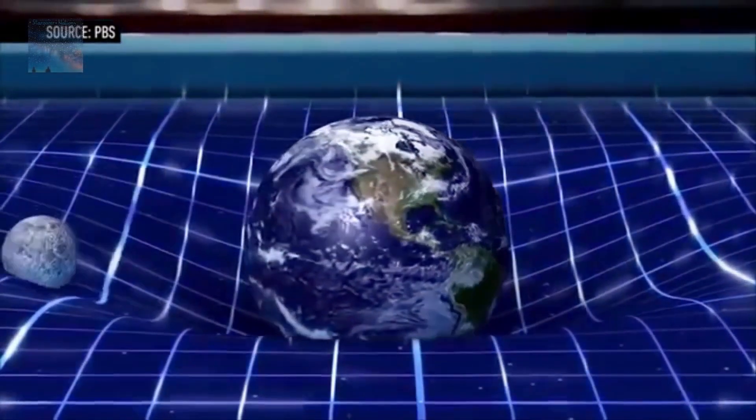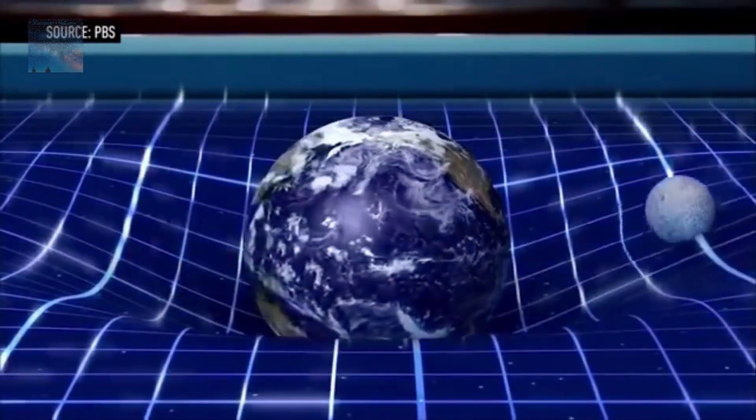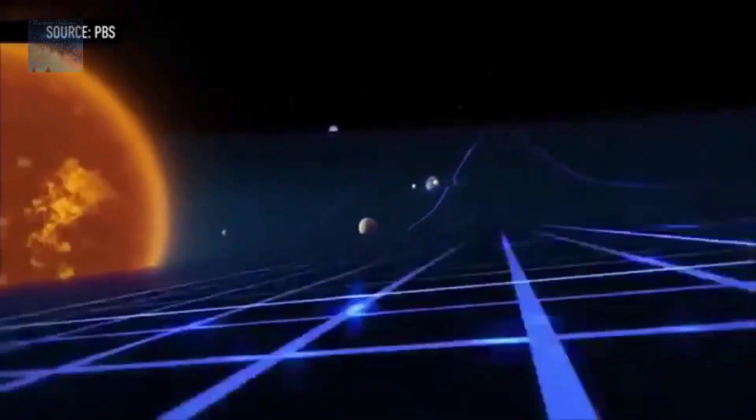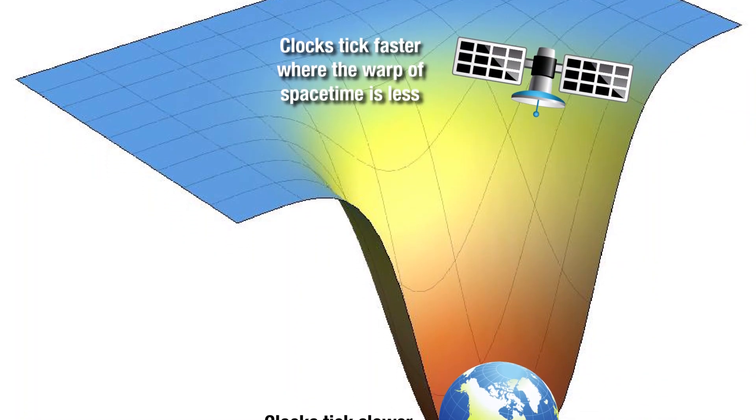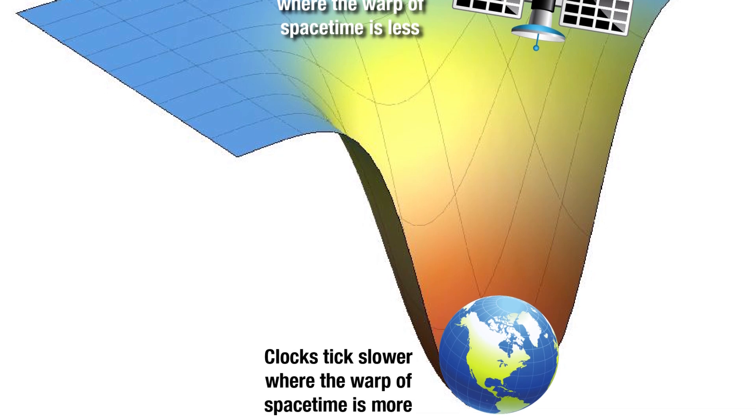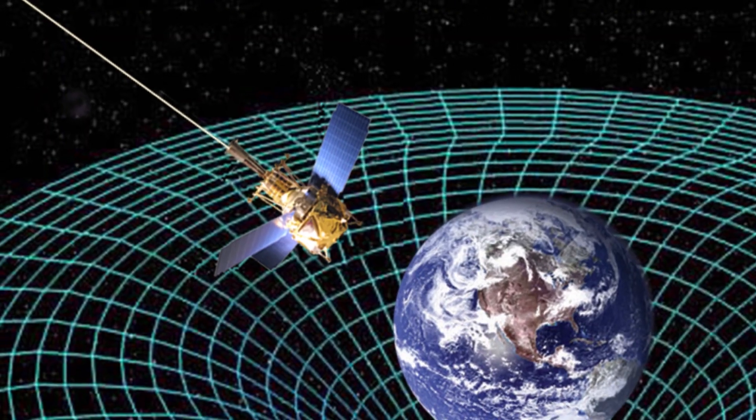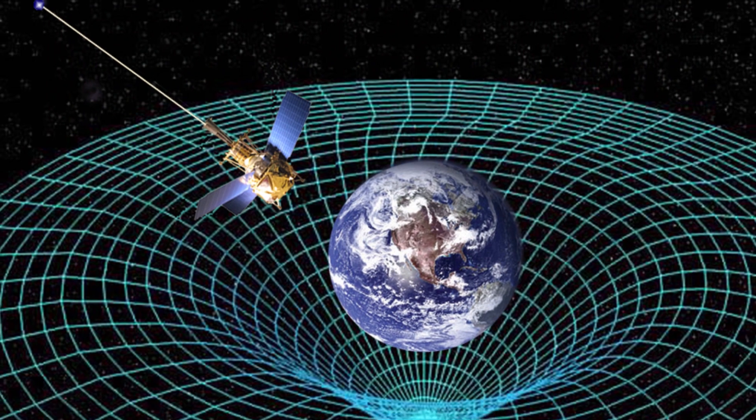Gravity impacts the speed of light because it affects the energy of the fabric of space, which in turn affects the speed of light and time. Atomic clocks at different altitudes track time at different rates due to gravity. Even our GPS systems need to be calibrated for the effects that gravity has on time.